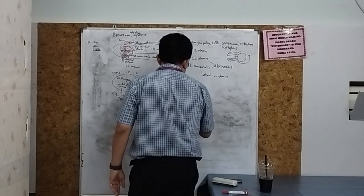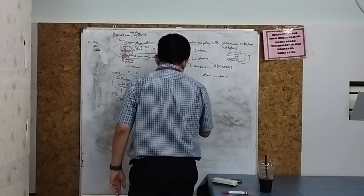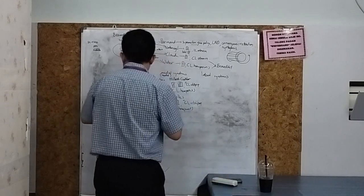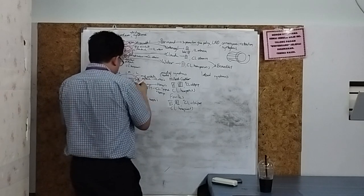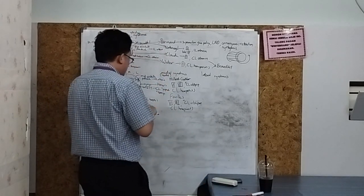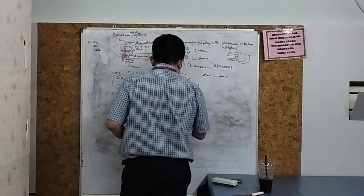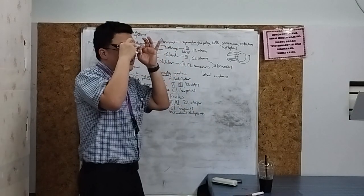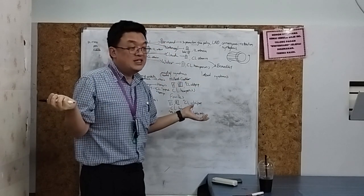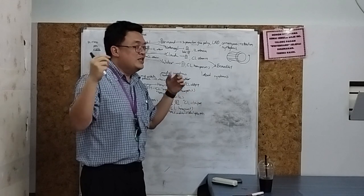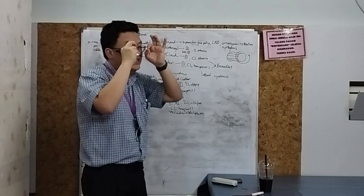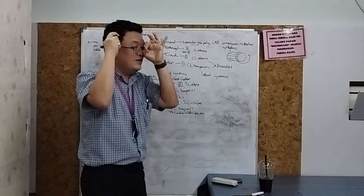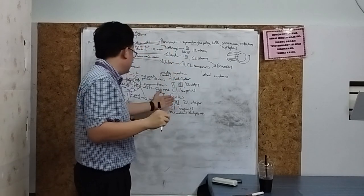Foville syndrome is similar to Millard-Gubler but also includes MLF involvement, giving a lateral gaze palsy. The sixth nerve and third nerve are connected via the MLF — so when you try to look laterally, one eye goes in but the other cannot go out, resulting in inability to perform lateral gaze at all. This is your Foville syndrome.